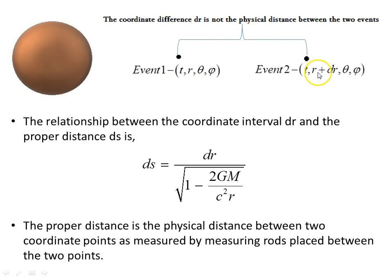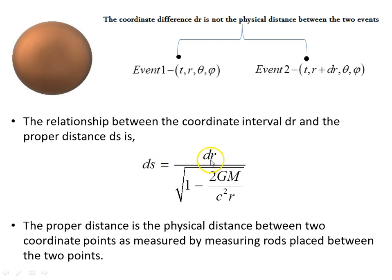Looking at events one and two from a different perspective: the coordinate difference dr is not the physical distance between the two events, so we need to be careful about that. We'll find throughout this video the relationship between physical measurements and coordinates. The relationship between the coordinate interval dr and the proper distance ds is given by taking the square root of what we had on the previous page. The proper distance ds equals dr divided by the square root of this factor — it is the physical distance between two coordinate points as measured by measuring rods placed between the two points.